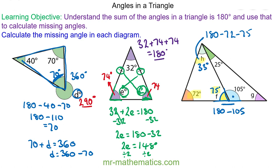And I can work out angle G using this angle and this angle. So angle G will be 180 take away 25 take away 105. So angle G is 50 degrees.